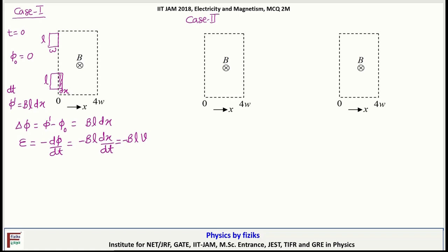In case 2, front end moves from x is equal to W to x is equal to 4W. So in this case, flux phi is B L dx that is some constant value. So induced EMF will be 0.